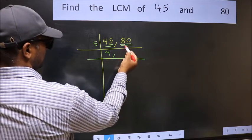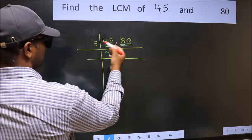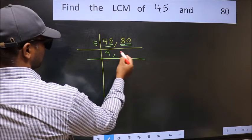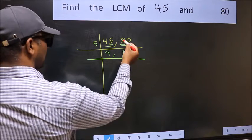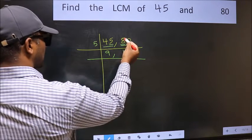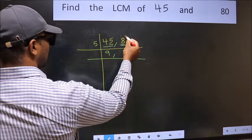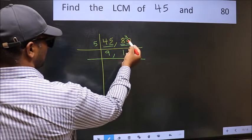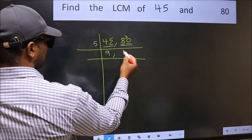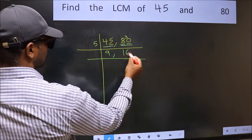First number gives 8. A number close to 8 in the 5-table is 5 once = 5. 8 minus 5 is 3, carried forward 30. When do we get 30 in the 5-table? 5 sixes are 30.